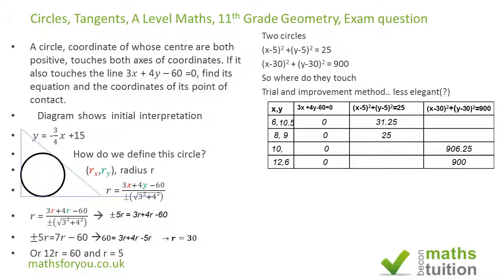For the big circle centred at (30, 30), trying x = 10 gives y = 7.5 on the line, but substituting into the big circle gives 906.25 — too big. Increasing x and reducing y, trying x = 12, y = 6 into the bigger circle gives exactly 900. So the bigger circle and the line 3x + 4y − 60 = 0 touch at the point (12, 6).